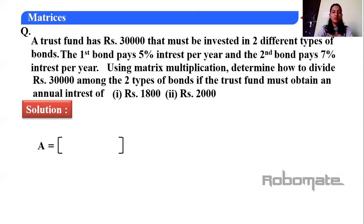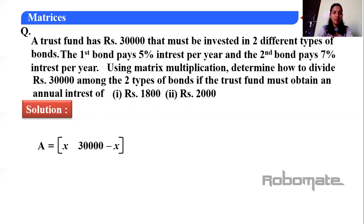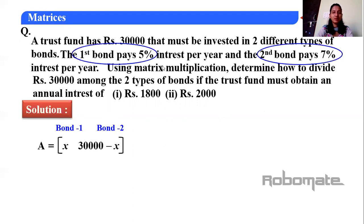Let the amount invested in bond A be x. Then the amount in bond B is 30,000 − x. Write this as matrix A = [x, 30000−x], a 1×2 matrix. The interest matrix B = [0.05; 0.07], a 2×1 matrix (since 5% = 0.05 and 7% = 0.07). We need the order to be compatible: 1×2 multiplied by 2×1 gives a 1×1 result.